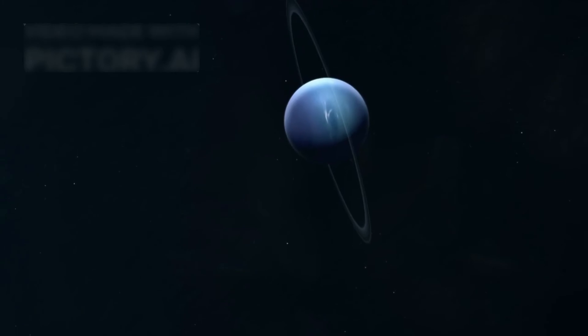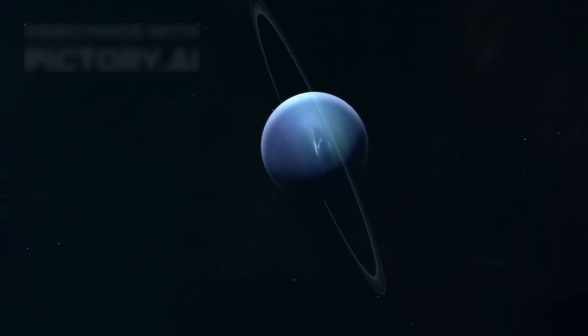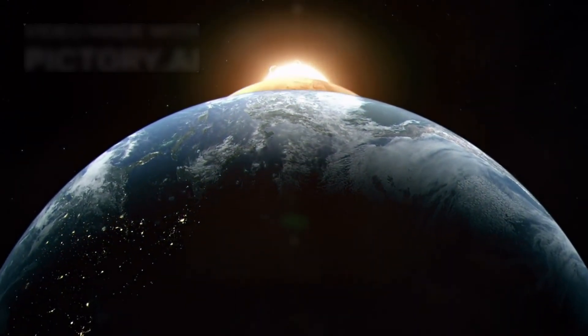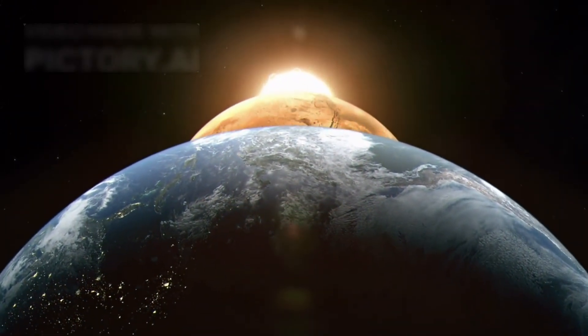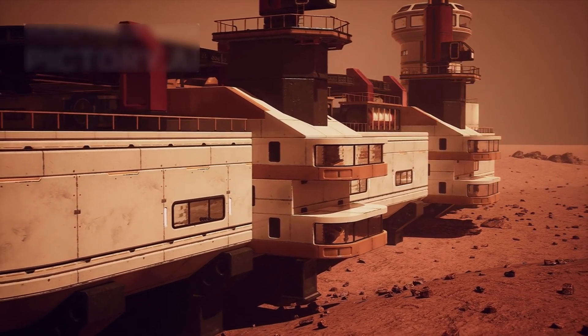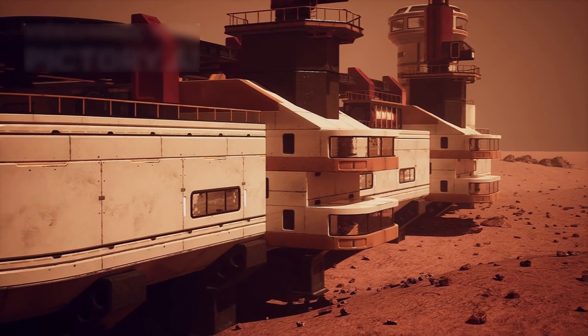Thanks to these gravitational assists, a journey that would normally take 30 years to reach Neptune could be cut down to just 12 years. However, there was one major catch: this planetary alignment occurred only once every 176 years. Faced with such a rare and fleeting opportunity, NASA acted quickly and planned something extraordinary.